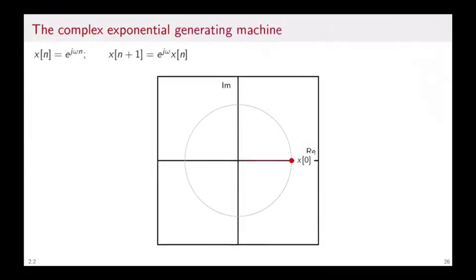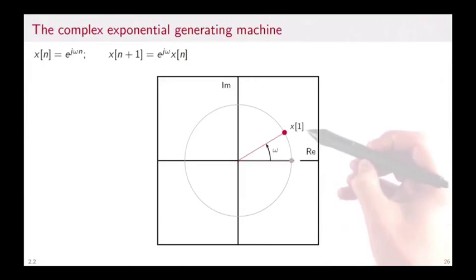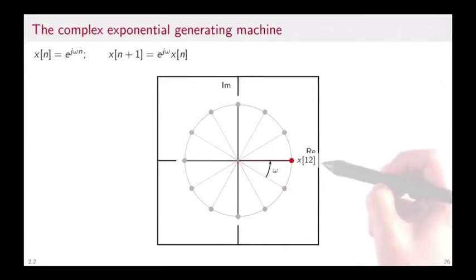Let's look at what we will call the complex exponential generating machine. x[n] = e^(jωn). x[n+1] is simply e^(jω) times x[n]. Recursively, we are going to generate successive samples of these discrete time complex exponentials. Let's start at x[0]. It's straight on the real line. Then it will move by ω. That gives x[1]. By 2ω is x[2], etc. It will keep going x[4], 5, 6, 7, and so on. In this particular case, x[12] happens to be back at the origin. Therefore, it will be a periodic discrete complex exponential.